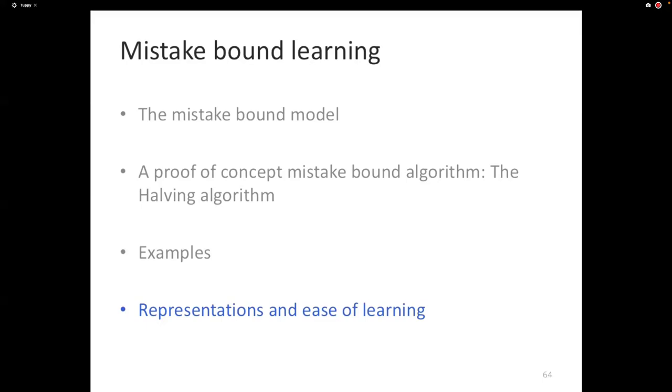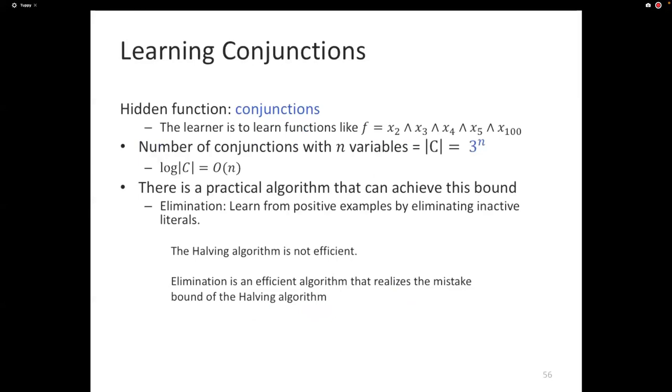I'm going to talk about what it means to learn a concept class easily or not so easily. And to do that, I want to use an example that we already saw before, which was the set of all possible conjunctions. The set of all conjunctions is learnable in the mistake-bound model because the number of mistakes that halving makes is, the number of possible conjunctions is 3 to the power n. And so the number of mistakes halving makes is log of that, which is basically n times a constant, it's order of n. So halving makes order of n mistakes, n number of features. And then in an earlier lecture I also pointed out that there's this rather simple algorithm called elimination, which can learn conjunctions, making only the maximum number of mistakes which will be the number of features. So elimination realizes the bound that halving provides.